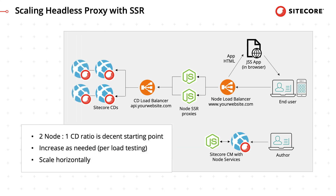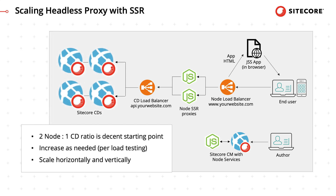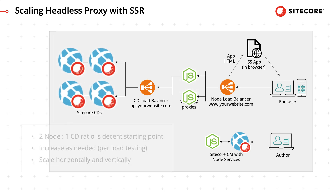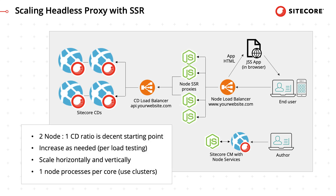The Sitecore CDs can be scaled horizontally and vertically to the limits of the layout service. Rendering JavaScript server-side takes CPU resources, and scaling it takes more of them, so you can scale Sitecore CDs without adding more node rendering instances. Generally speaking, you'd want at least as many node processes as the number of cores, which is achieved via node clusters.